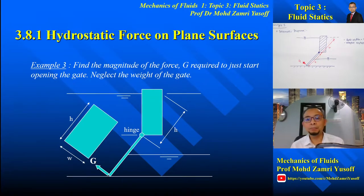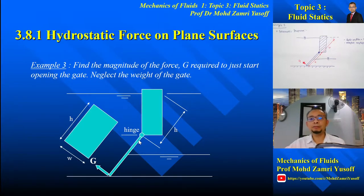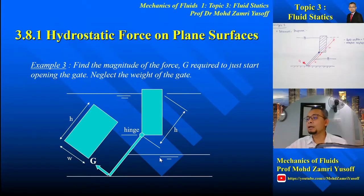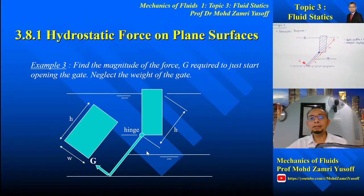Bismillahirrahmanirrahim. Now let us continue with example number 3. In this example, we have a gate such that water exists on both sides of the gate, but the level of the water on the left hand side and the right hand side are different. The water level on the right hand side is halfway up the height of the gate. We need to obtain the force G which is required to open the gate.